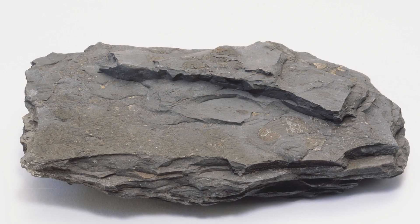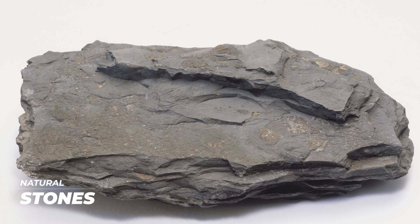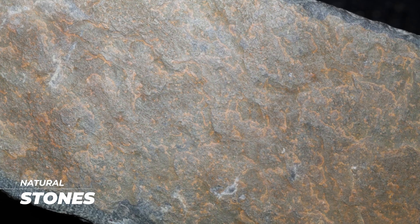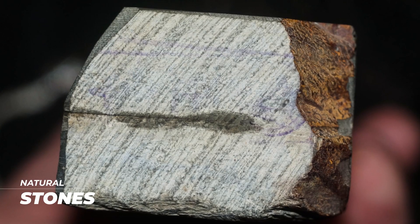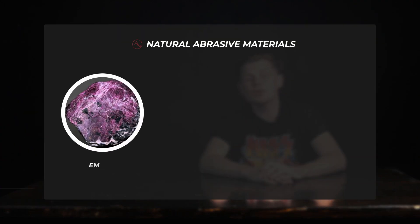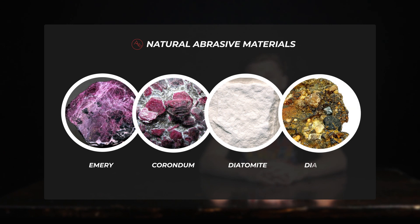Natural stones are also widely used in sharpening. As a rule, they are made of shale rocks — a variety of rocks with a parallel layered arrangement of fine or medium temperature minerals. Unlike other natural abrasive materials like emery, corundum, diatomite, and natural diamond, shale stones are widely used in sharpening. The most popular natural stones are Belgian, Japanese natural stone, and American Arkansas.